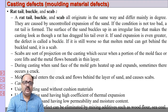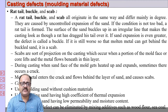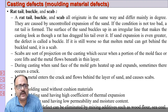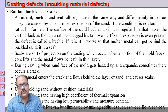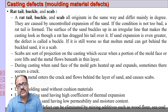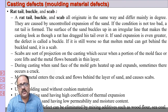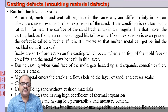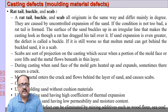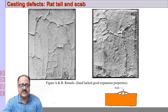Then we have rat tail, buckle, and scab — these are essentially the same defect but of different degrees. The smallest degree is called rat tail. This happens because cushion materials are not added to the molding sand. Cushion materials burn during the pouring of molten metal and evaporate, leaving space for the sand to expand. If sand expansion is uncontrolled, it fractures — the degree of fracturing determines whether the defect is a rat tail, buckle, or scab. It appears as if a rat has brushed its tail over the casting surface.